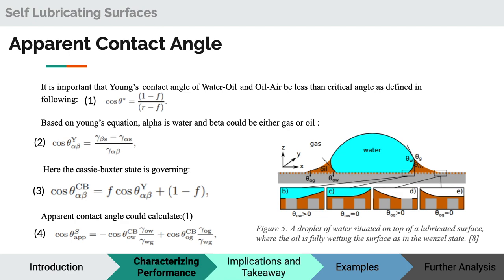What is important here is the critical contact angle of water on oil and gas on oil. Young's contact angle for each should be less than the critical ones, and the critical contact angle depends on roughness and solid fraction that we can change with design. As you can see in the figures on parts C and E, with vanishing contact angle of gas on oil and water on oil, we are separating the solid phase from water and gas. If we are not, as you can see in figures B and D, water and oil can pin on the solid part and increase contact angle hysteresis. Here the Cassie-Baxter state is governing, so we can calculate the Cassie-Baxter contact angle for water on oil and gas on oil and use that for the apparent contact angle calculation.